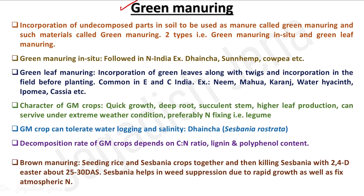In green manuring, the crop itself is grown in the field and before it reaches the flowering or early pod development stage, it is incorporated back into the field. Most importantly, the green manuring crop should be a nitrogen-fixing crop so that by the time we incorporate it, it can fix atmospheric nitrogen in the soil.